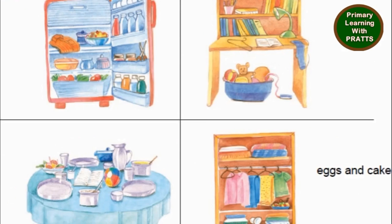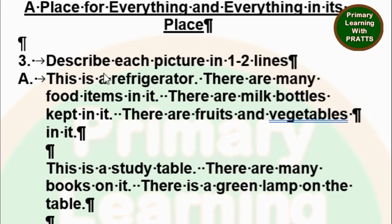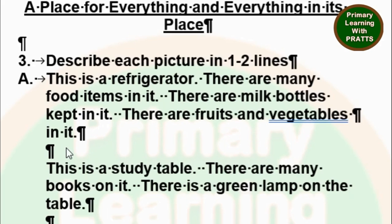Now let's write two or three sentences about each picture. For the first one: This is a refrigerator. There are many food items in it. There are milk bottles kept in it. There are fruits and vegetables in it.